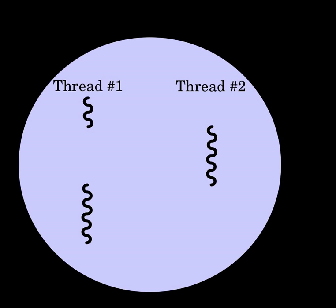In TCL, each thread has one or more interpreters. Event-driven programming hardware description languages such as Verilog have a different threading model that supports extremely large numbers of threads.